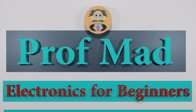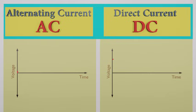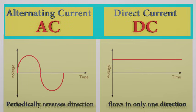Welcome to Professor MAD. We mainly have two current types that are widely used. One is alternating current which periodically reverses direction. And other is direct current which flows in only one direction.